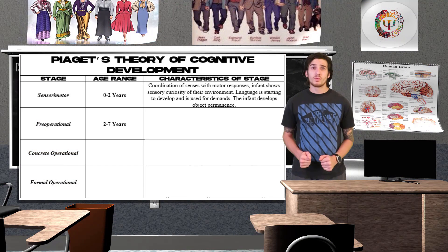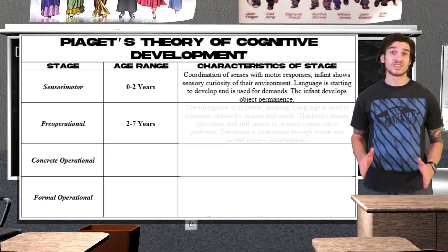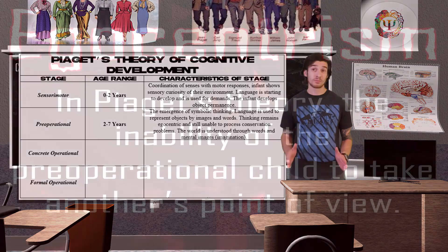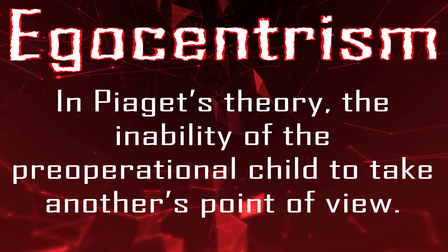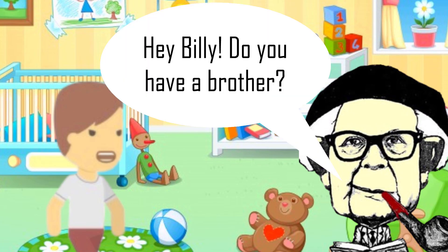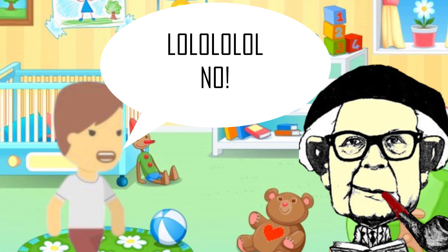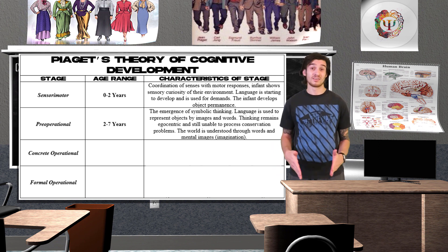From ages two to seven, we have the pre-operational stage. During this stage, the child learns language but does not yet comprehend the mental operations of concrete logic. Children are very egocentric, meaning the child is unable to take another point of view. For example, Piaget would ask Billy, 'Do you have a brother?' Billy would reply, 'Yes, Bobby.' Piaget would then ask, 'Does your brother Bobby have a brother?' and Billy would respond with 'no' due to his egocentric thought. It's the same reason why a preschooler might stand in front of you while watching TV, thinking that you can see what they can see — it's not selfish, it's just their lack of cognition.